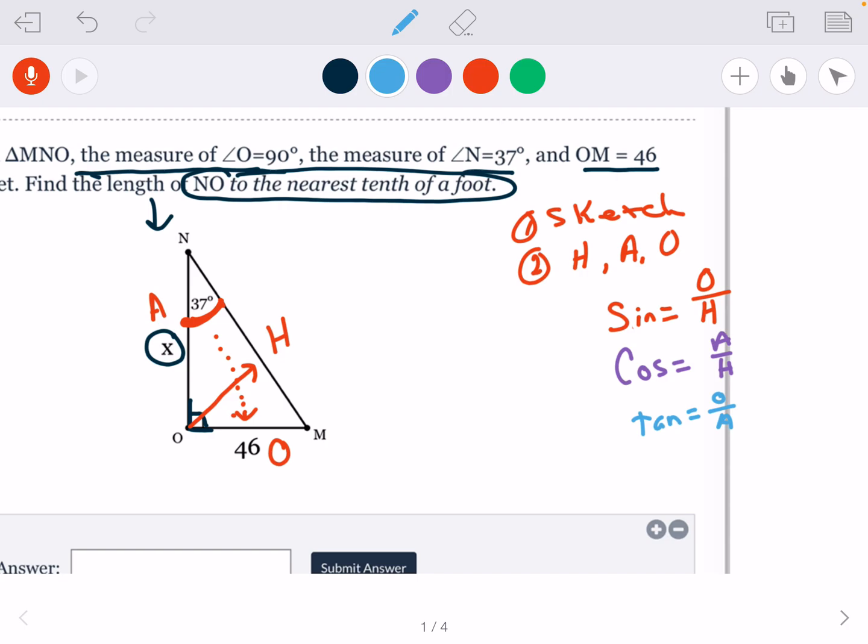So going back to my figure, here's my H. There's no variable or number here, so H is no good to me. I have an A with a value of X, and I have the opposite with a value of 46. So I have an A and I have an O, and I look to my three trig ratios and see which one has an A and an O. This one has an O and an A, so that one's it.